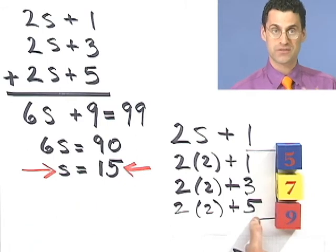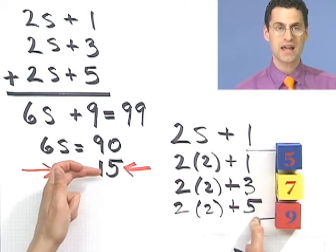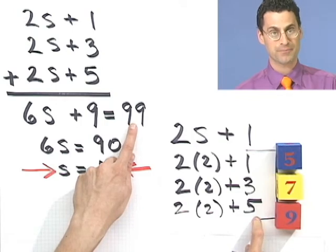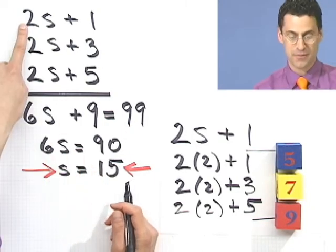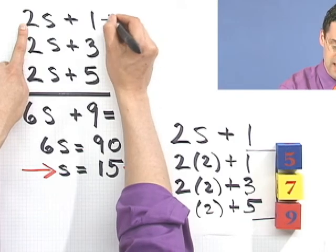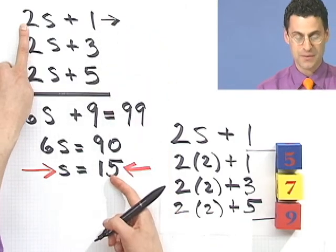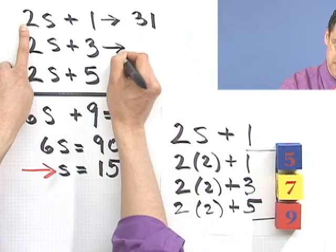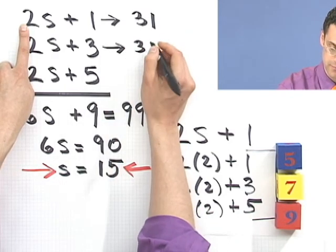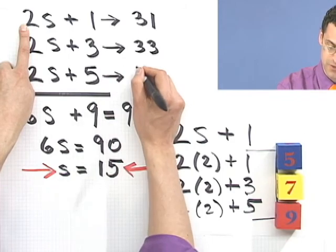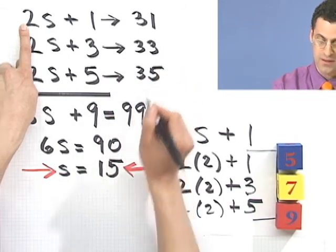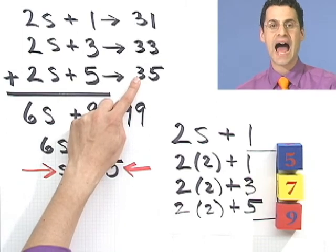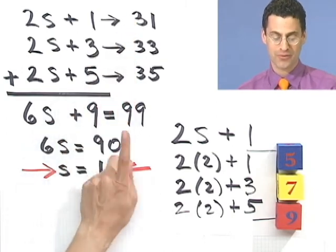Another way you would have detected this, by the way, is if you would have checked your answer. If you take 15, add it to 17, add it to 19, you're far, far away from 99. So be careful there. Okay, but if we go back to this number, what I see is this number is now going to be 15 times two plus one, which is 31. Which forces this number to be 33. Which forces this number to be 35. Notice those are three consecutive odd numbers, and voila! If you add them all up, we get 99.